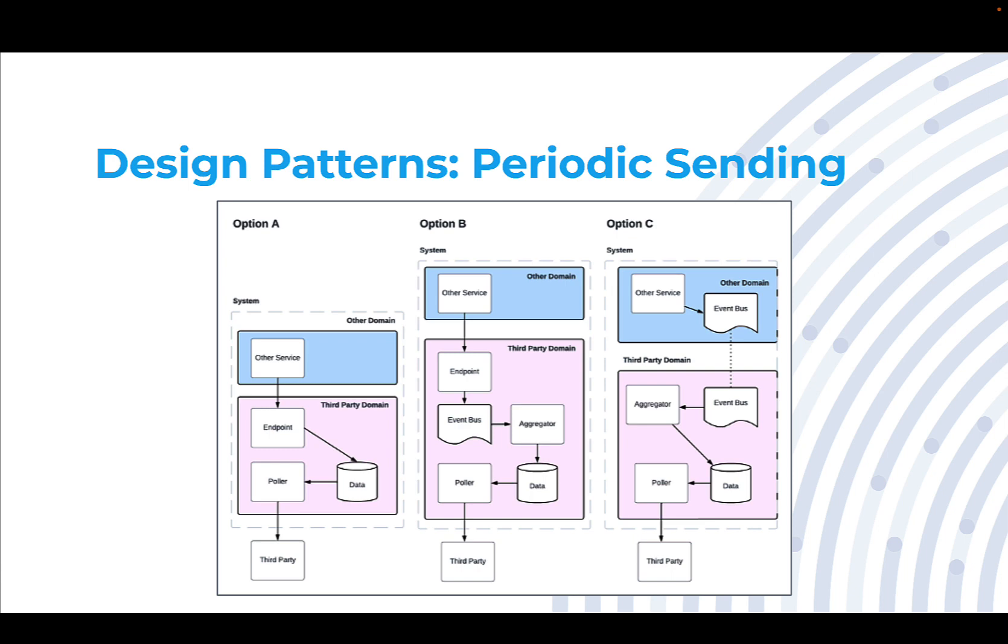The advantage of option B over option A is that we've really broken up the problem into three independent applications: an endpoint for someone to call, an aggregator for taking that data and representing it in a meaningful way within our domain, and then finally a polling application responsible for taking the data and then sending it out to the third party when it becomes available.